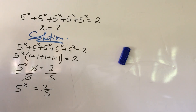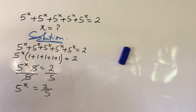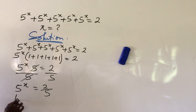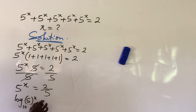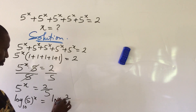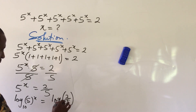So from here, if we divide through by 5, we're left with 5 to the power of x equal to 2 over 5. Now we take log to base 10 on both sides of the equation. So we're going to have log of 5 to the power of x, base 10, equal to log of 2 over 5, base 10.